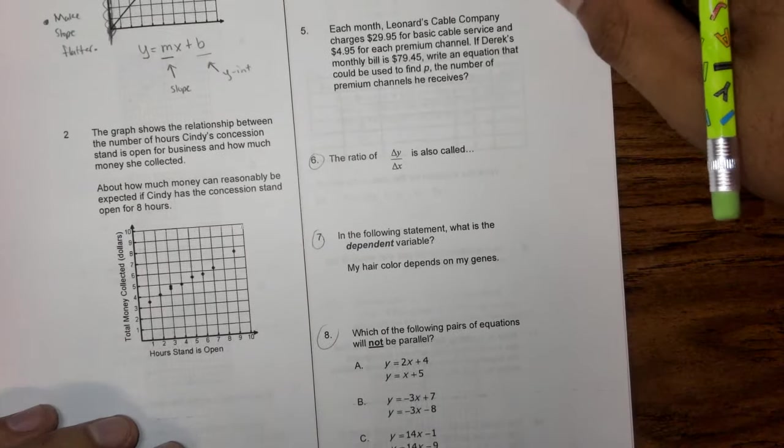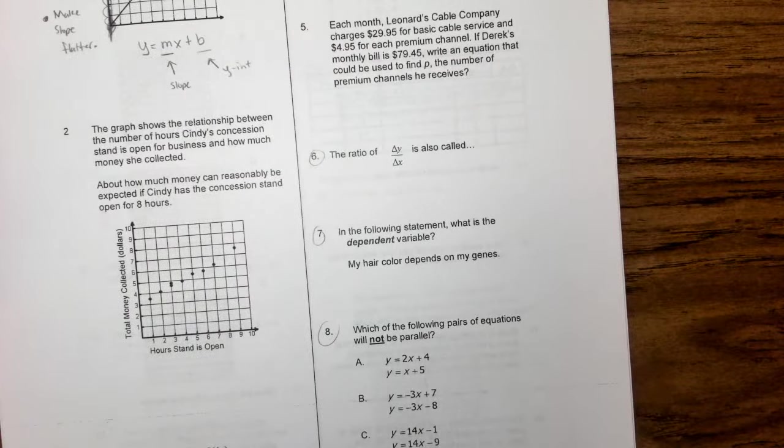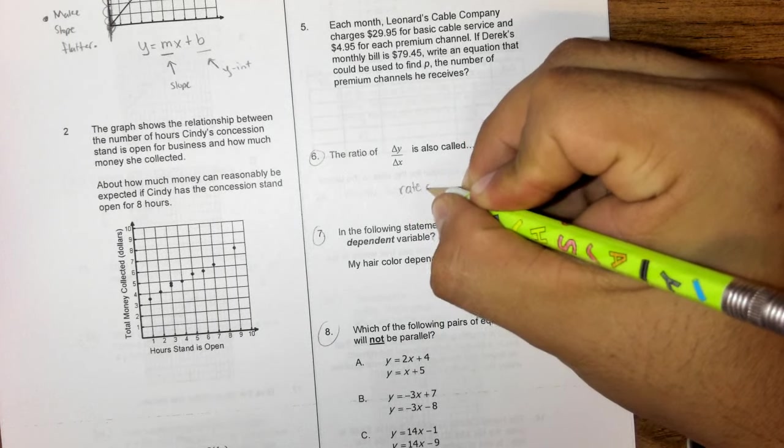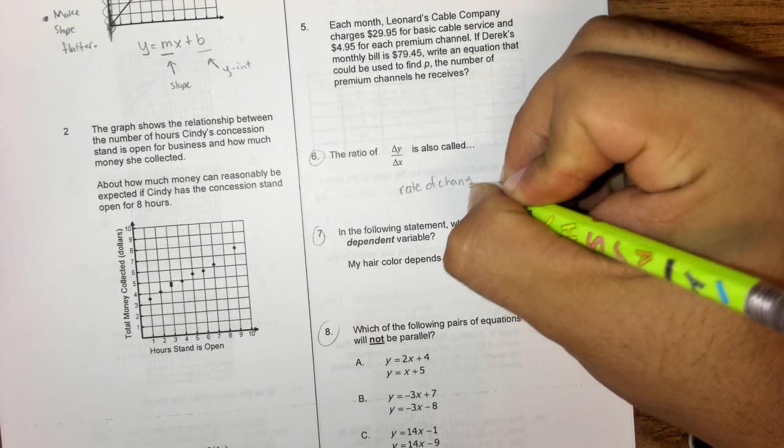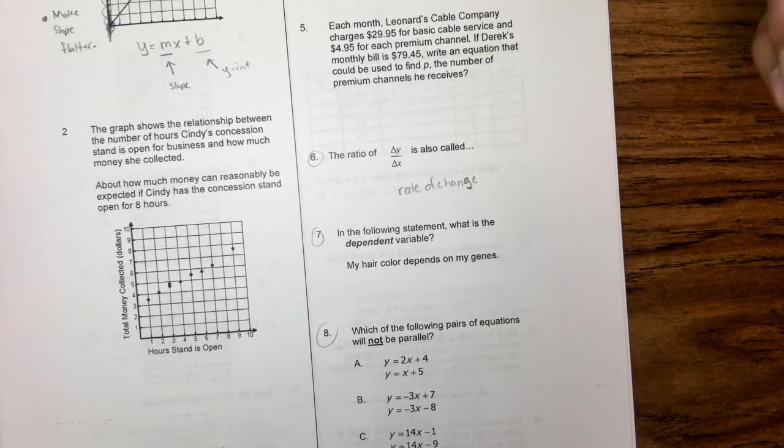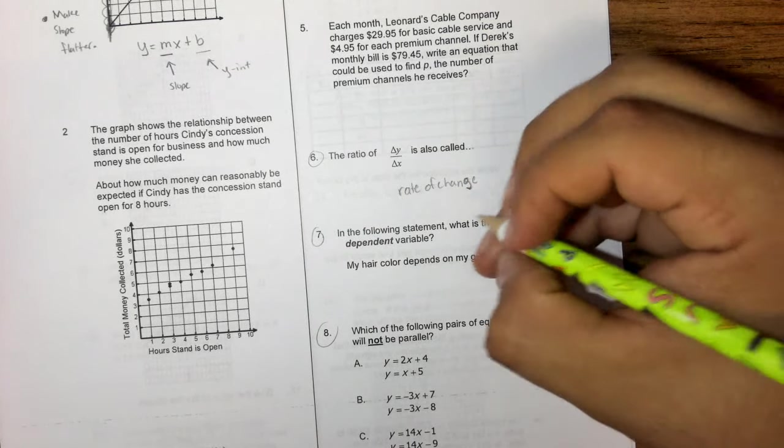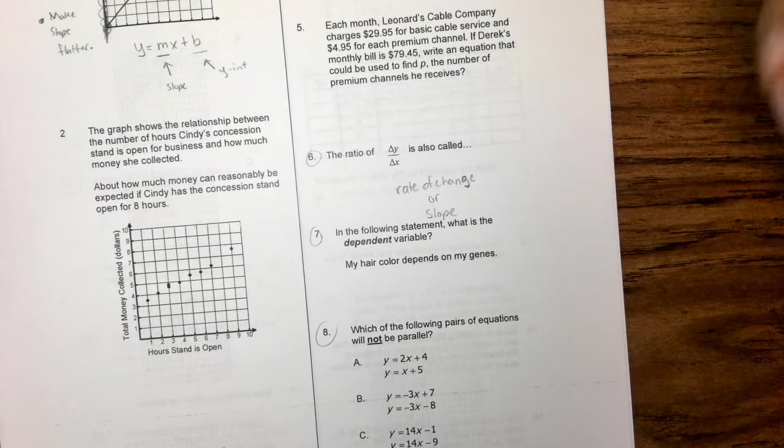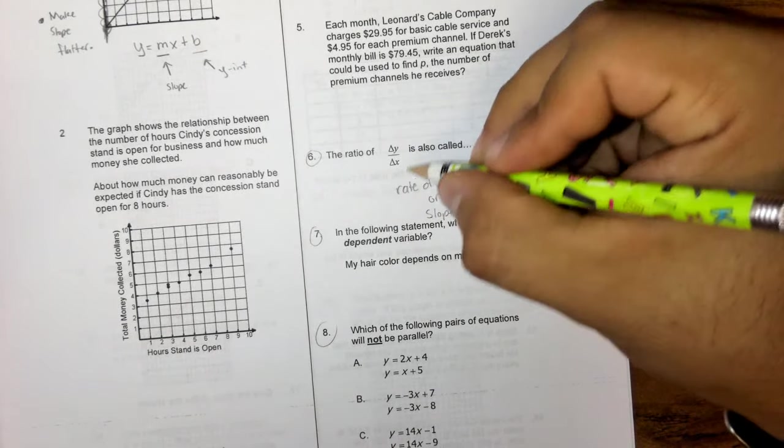We're going to jump to number six. Number six, it says the ratio of delta y over delta x is also called, this is going to be rate of change. So yes, technically you can write it out, delta y over delta x. This is also known as my rate of change, or my slope. So anytime you see delta y over delta x, it's both of these.